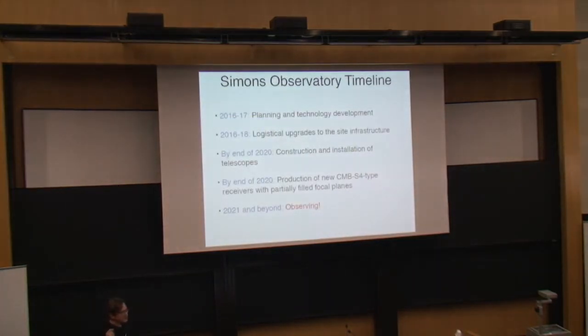The rough timeline for this is right now we are deeply involved in the planning, so the optimization of the instrument and the survey and the development of the technology. Meanwhile, there are logistical upgrades going on at the site. The plan is, around the end of 2020, to have constructed telescopes and also some new receivers, which will be CMB-S4 type. This is together with the technology development for CMB-S4, but instead of filling out the focal planes completely, some subset of the focal planes will be filled in on this time scale for doing Simons Observatory science. The plan is to start observing 2021, and then with the first science results coming out a year or two after that.